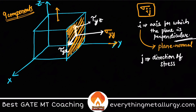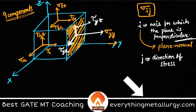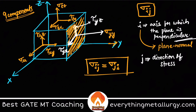Similarly on another face, we have sigma z z, tau z y, and tau z x. On the remaining face we have sigma x x, tau x z, and tau x y. If you look across all the components, you can always say sigma i j equals sigma j i.